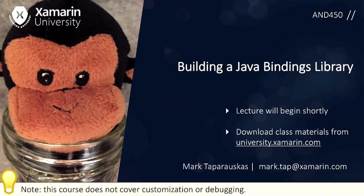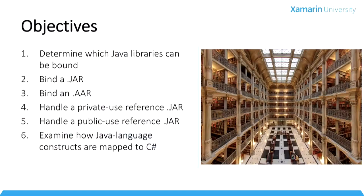Note that this course covers how things work, all the core concepts, and how things work when everything goes right. It does not cover how to do customization nor debugging with a binding. We'll start with a definition and then talk about what libraries are eligible to have binding libraries created for them, and then we'll do some binding first with a Java archive file and then with an Android archive file.